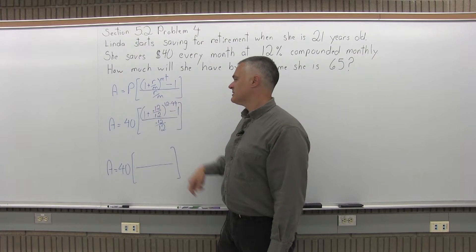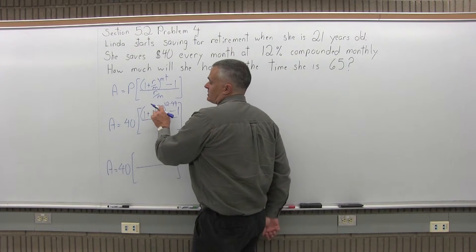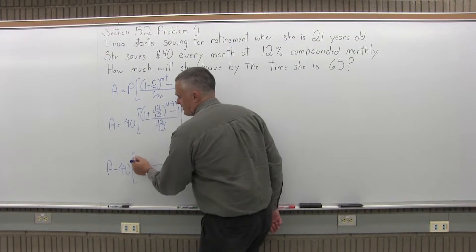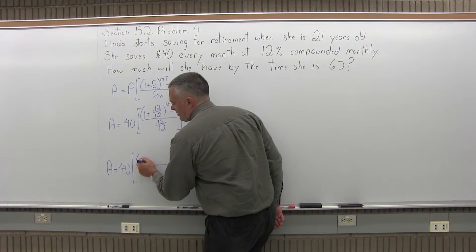That's why it's 0.01, two places. And I'm going to add 1 to that. So the 0.01 plus 1 in my parentheses, I have 1.01.